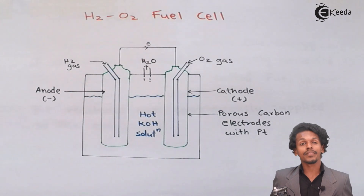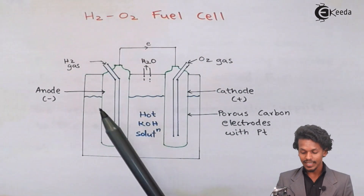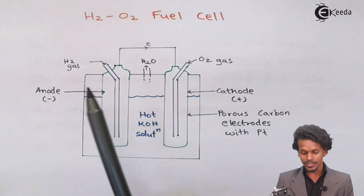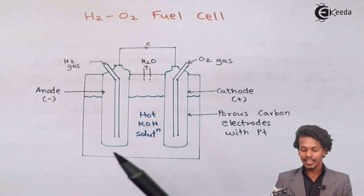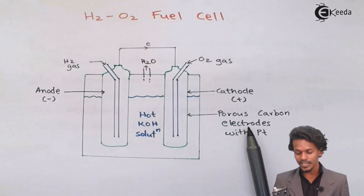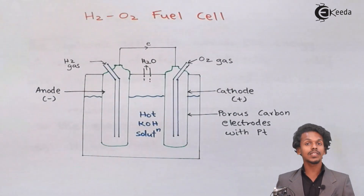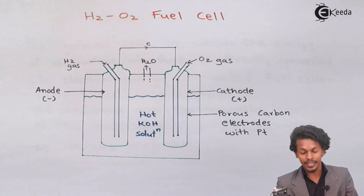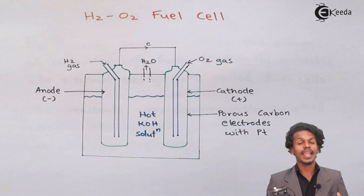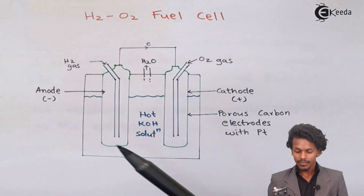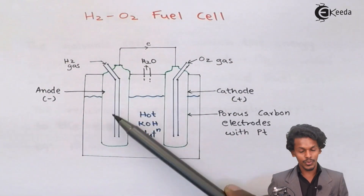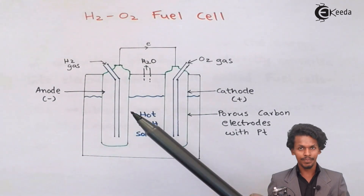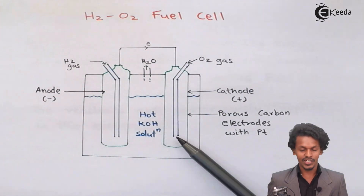This is a schematic diagram of an H₂–O₂ fuel cell. It shows a large container consisting of a hot KOH solution and two electrodes — an anode and a cathode. Both anode and cathode are made of porous carbon electrodes with platinum. H₂ gas is injected into the anode side and O₂ gas is injected into the cathode side.